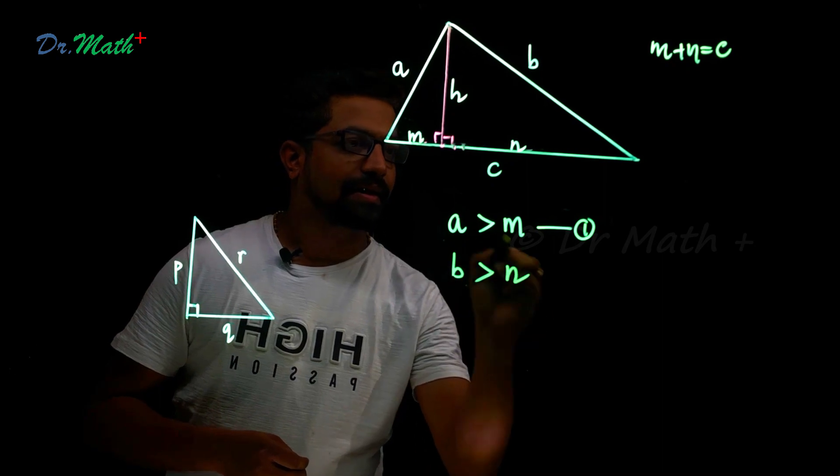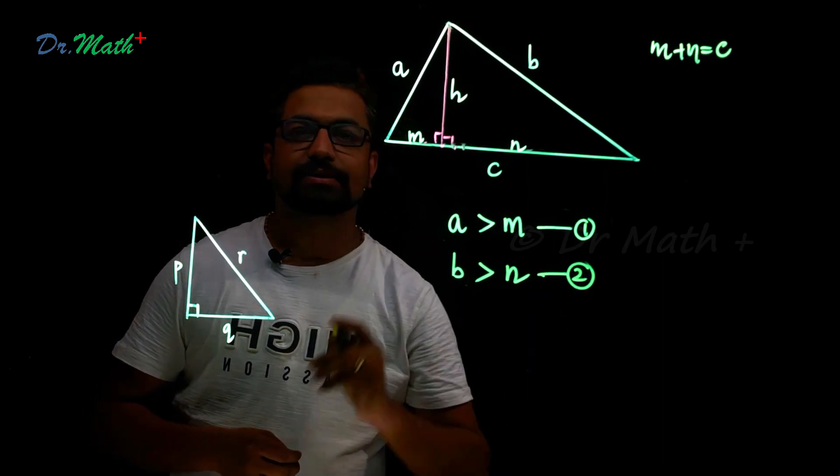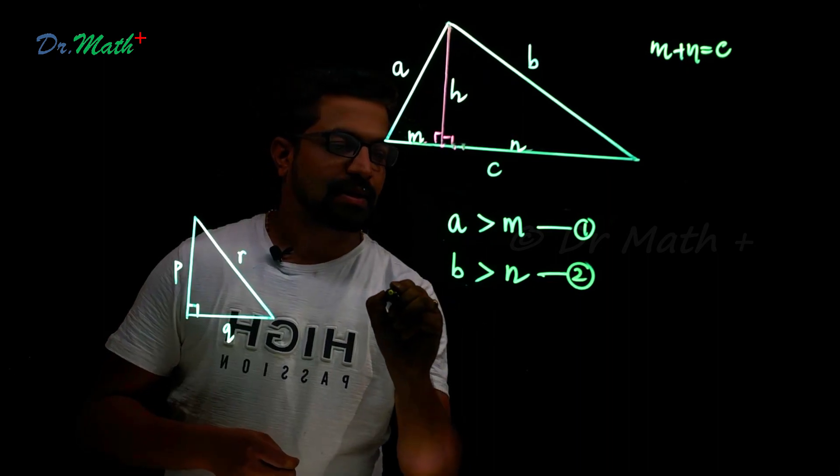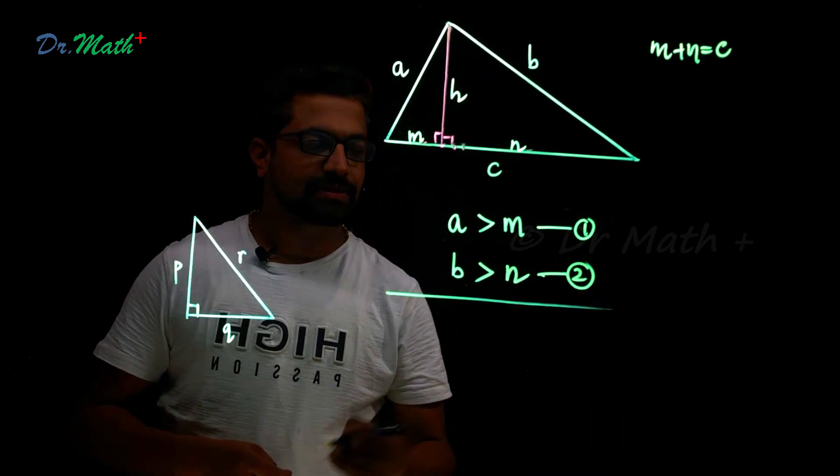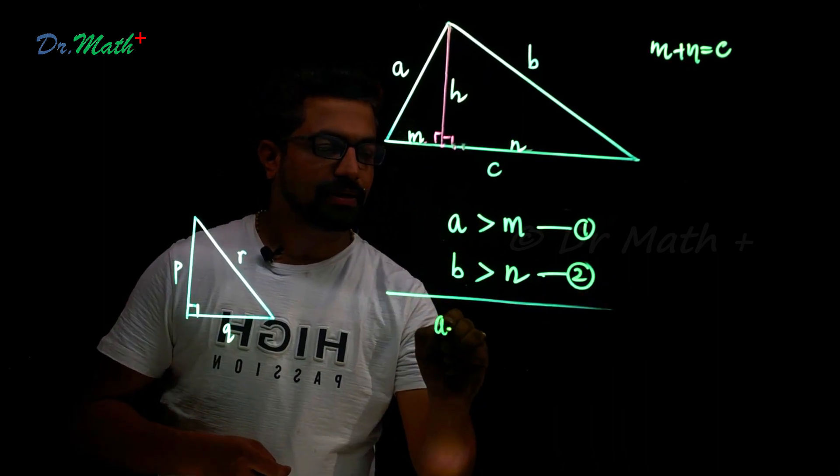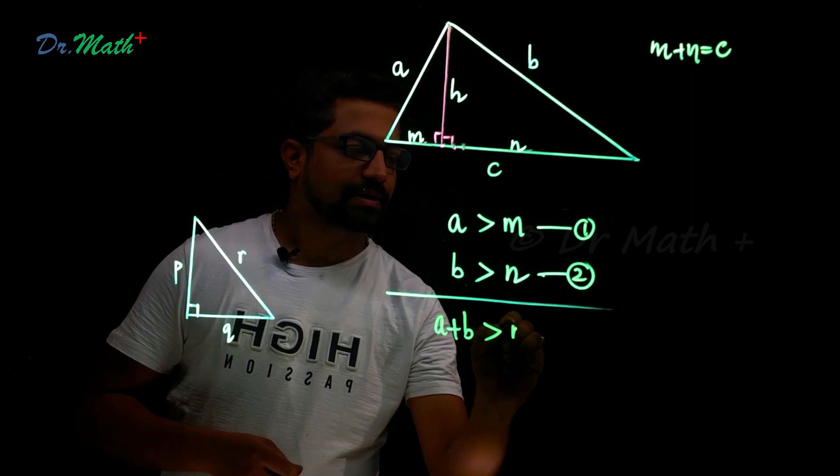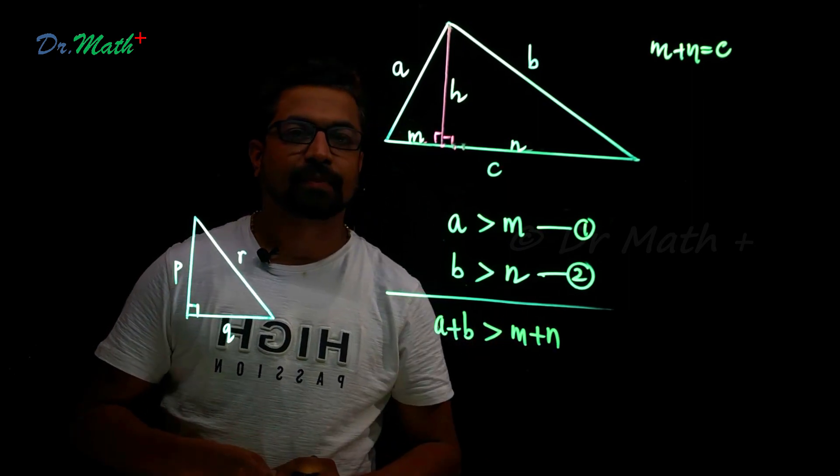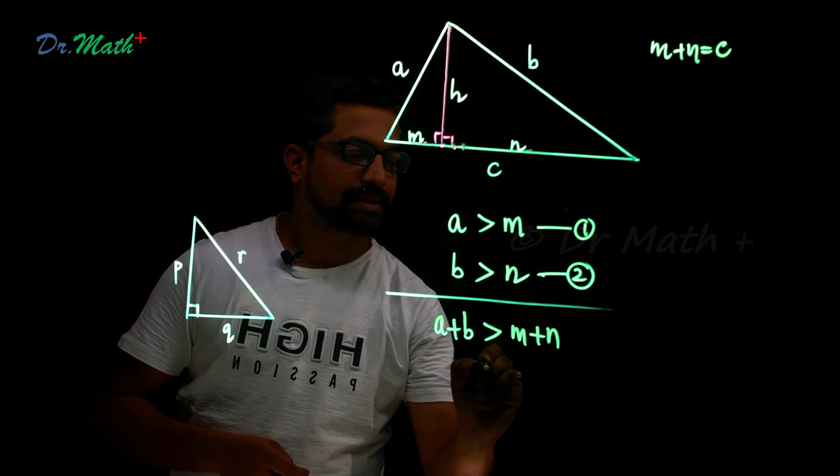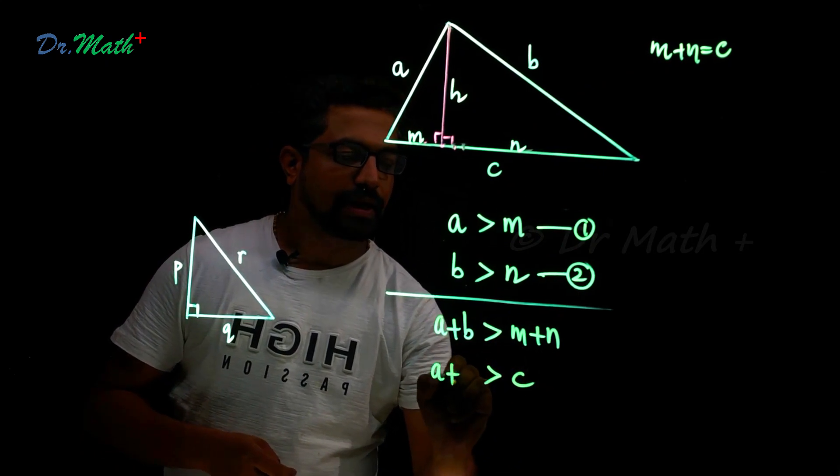And what about this right angle triangle? b is the hypotenuse, therefore b is greater than n. Let's call this inequality as two. If I add these two inequalities, a plus b is greater than m plus n.